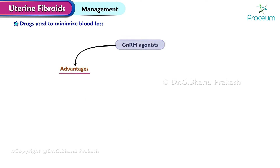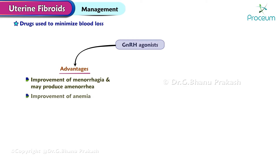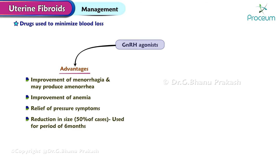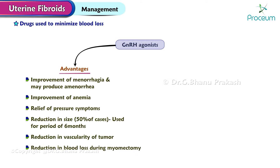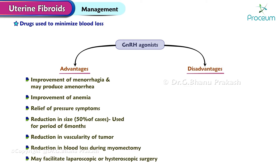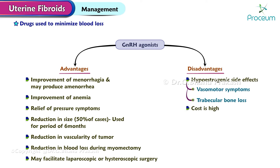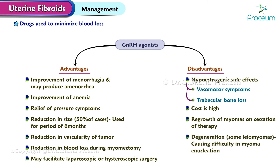Advantages of gonadotropin-releasing hormone analogs: improvement of menorrhagia and may produce amenorrhea; improvement of anemia; relief of pressure symptoms; reduction in size in 50% of cases when used for a period of 6 months; reduction in vascularity of the tumor; reduction in blood loss during myomectomy; may facilitate laparoscopic or hysteroscopic surgery. Disadvantages: hypoestrogenic side effects, vasomotor symptoms, trabecular bone loss, high cost, regrowth of myomas on cessation of therapy, and degeneration of some leiomyomas causing difficulty in myoma enucleation.